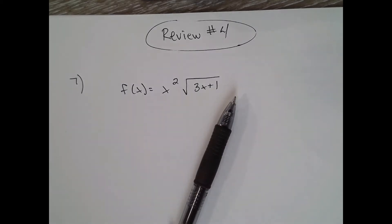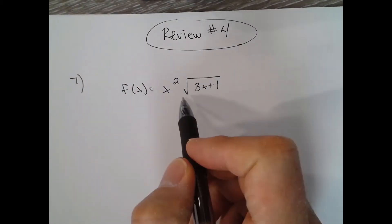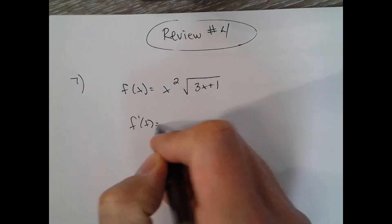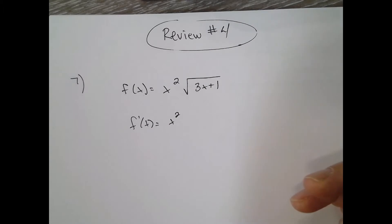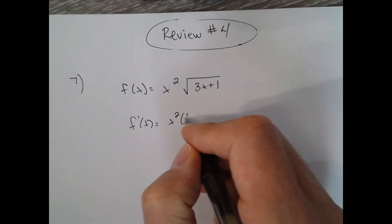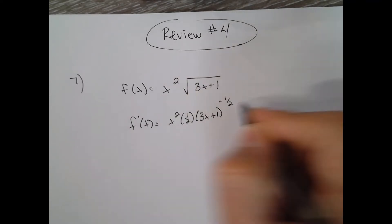Review packet number four, problem seven. We're just trying to find the derivative here, so that looks like we'll have to do a product rule. So f prime of x equals x squared times the derivative of the square root of three x plus one, which is one-half three x plus one to the negative one half times the derivative of the inside which is three.